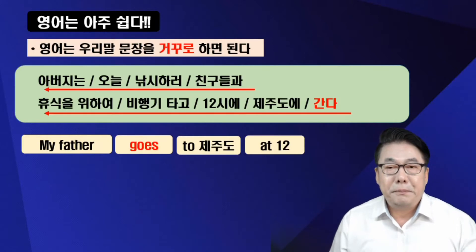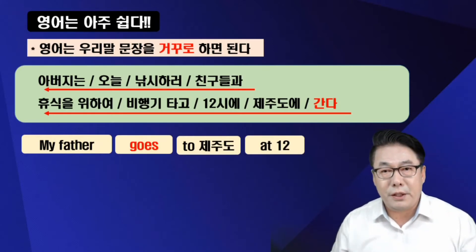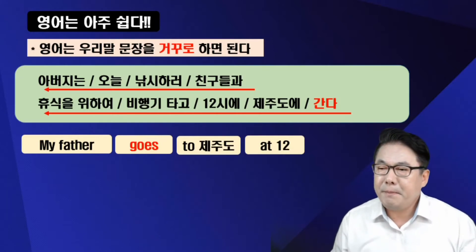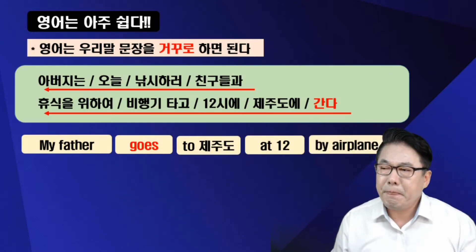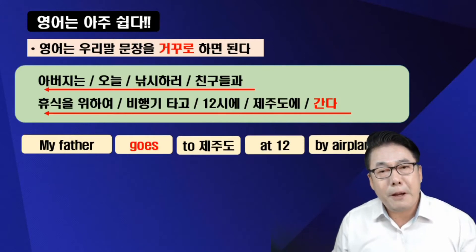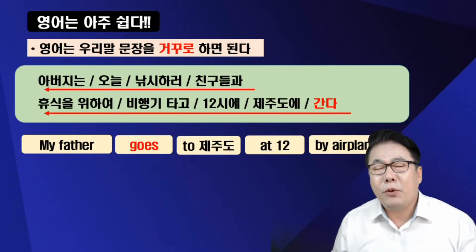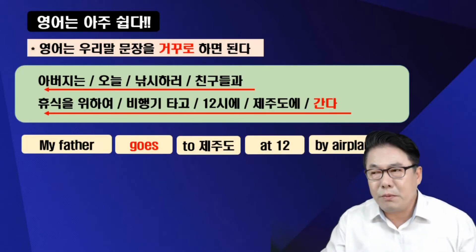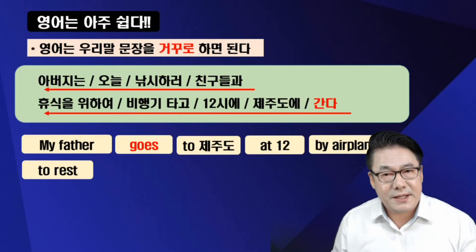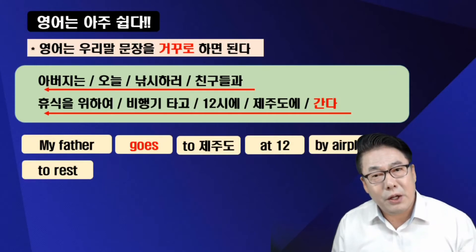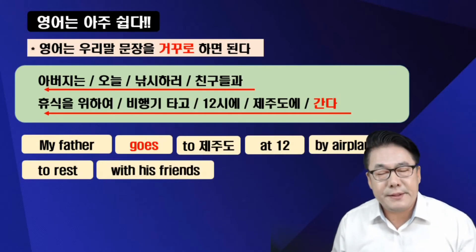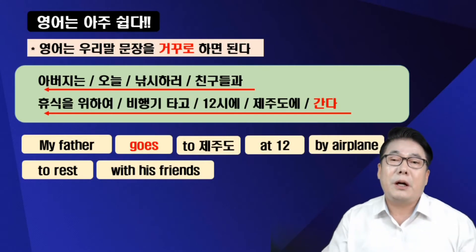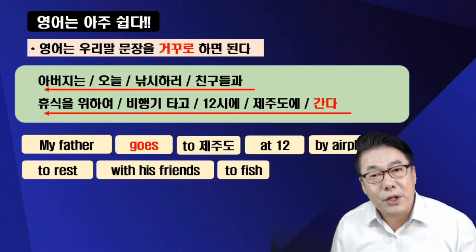그 다음에 비행기 타고인데, 타고가 먼저니까 by airplane 하면 되겠죠. by plane 해도 되고요. 그 다음에 휴식을 위하여, 동사 앞에는 무조건 to만 붙이면 됩니다. to rest 하면 되는 거죠. 그 다음에 친구들과, 과가 먼저니까 with가 먼저. with friends 하면 되겠죠. 그 다음에 낚시하러, 또 동사니까 to fish 하면 됩니다.